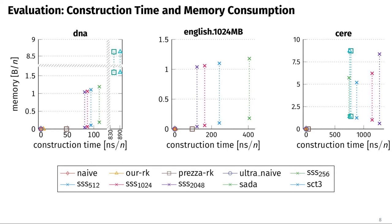On DNA, the compressed suffix tree requires more construction time and additional memory than all other algorithms and data structures. On English, we were unable to compute the compressed suffix trees using the succinct data structure library. On Sere, the compressed suffix tree still requires more memory than our string-synchronizing set data structures, but it can be computed faster than those except for tau equals 256.